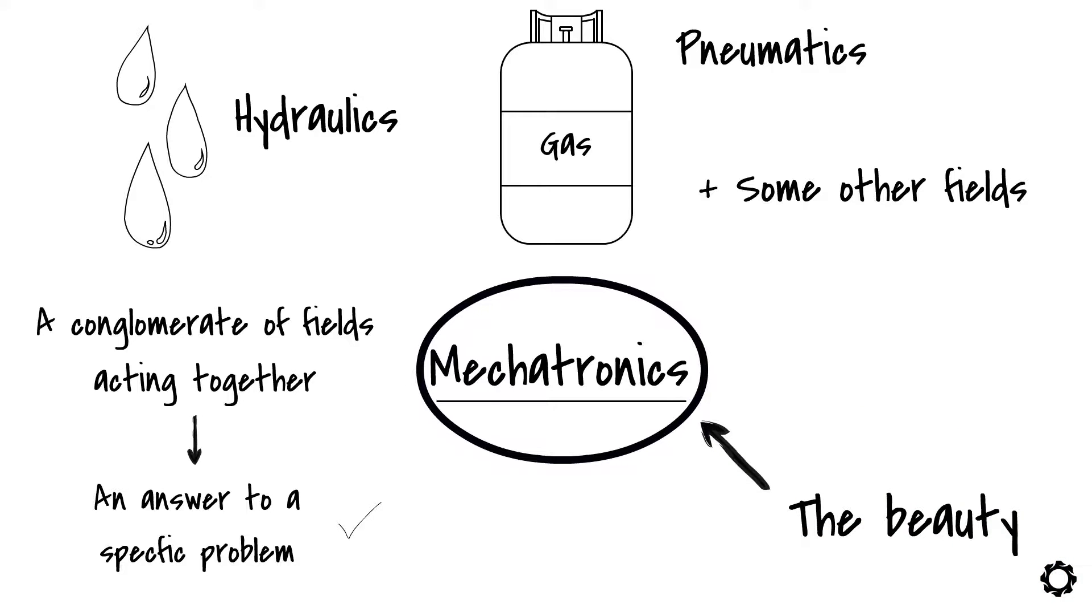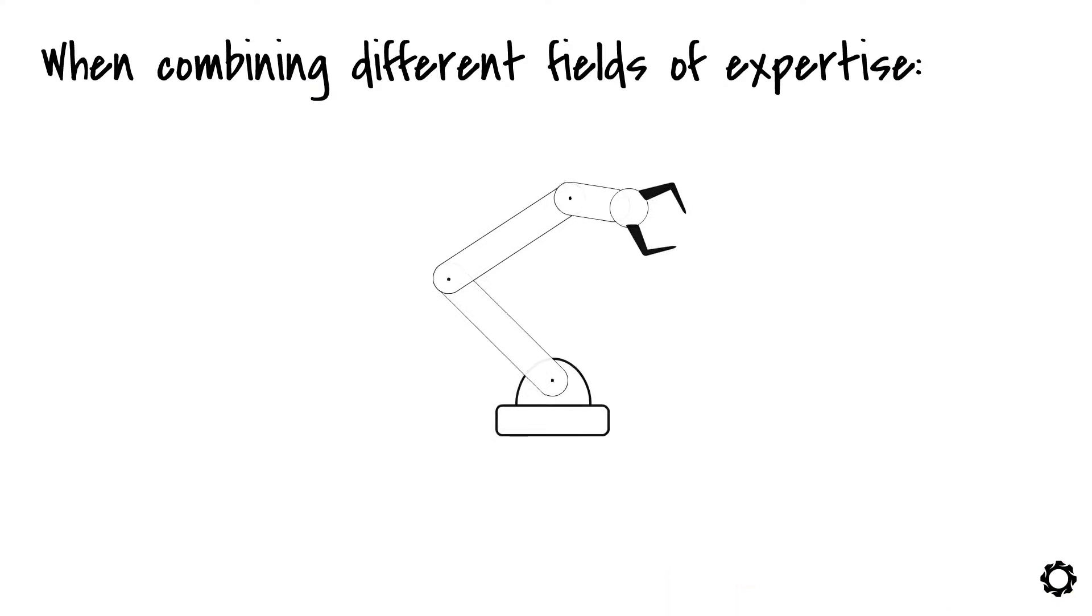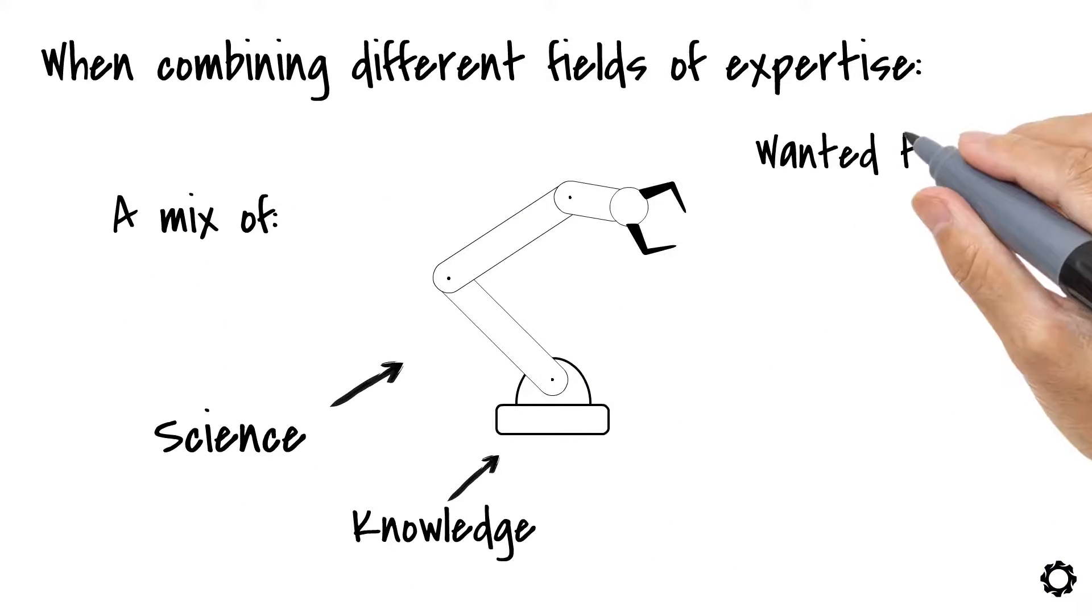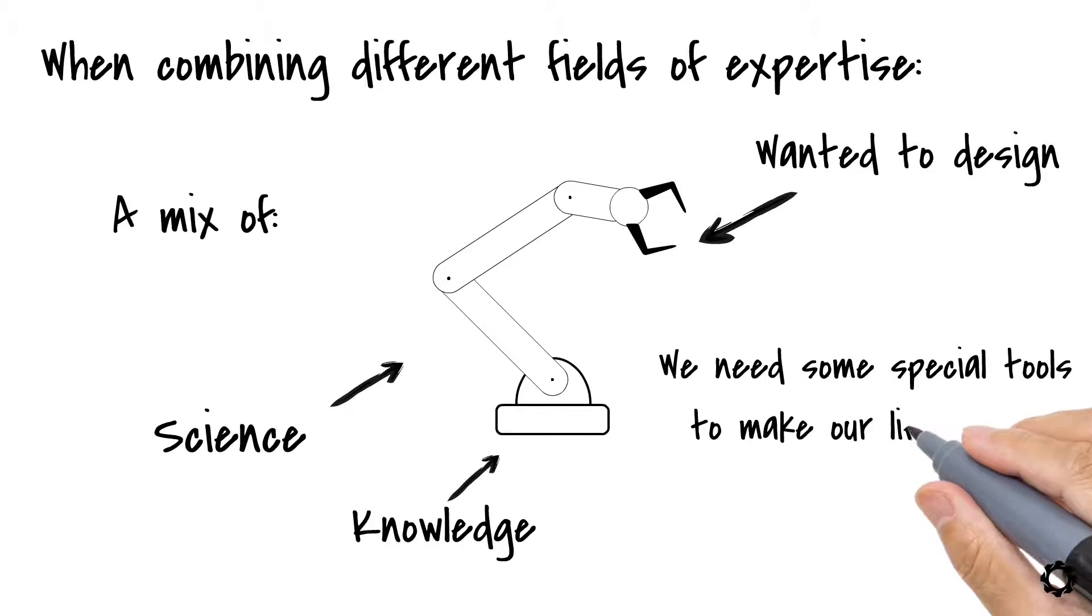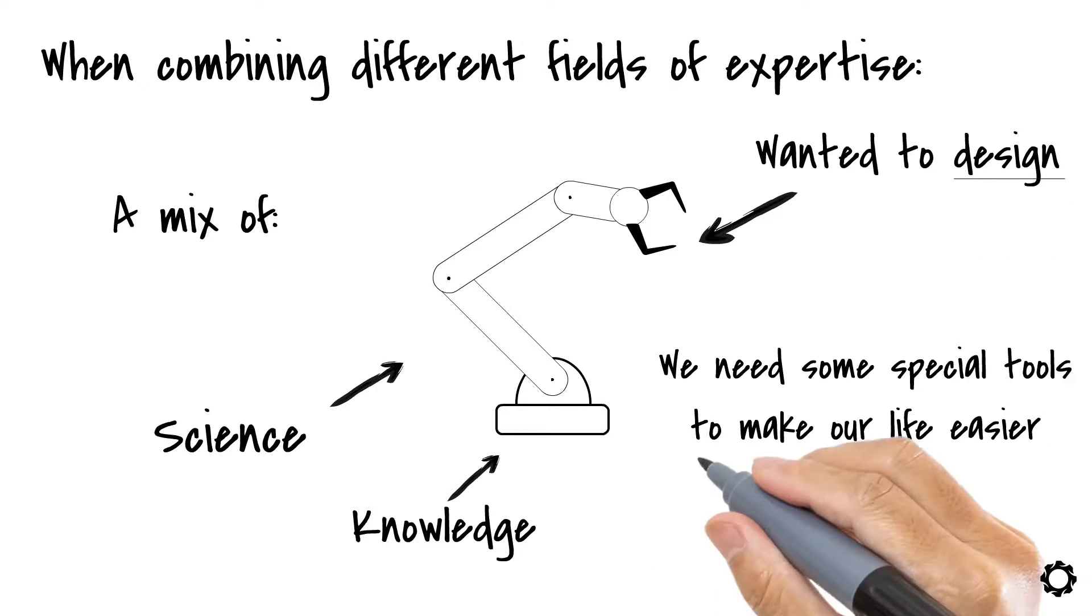As you may imagine, when combining different fields of expertise into one machine, it also means that there is a mix of science and knowledge to apply if we wanted to design such systems. And it also looks like we need some special tools to make our life easier when approaching the design of these machines.